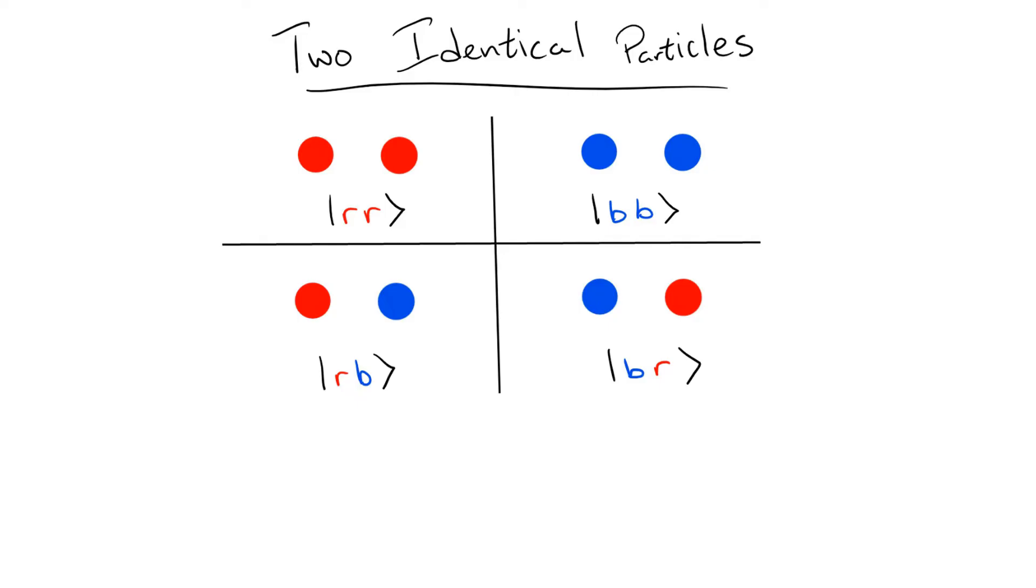and particle 1 blue, particle 2 red. Like before, we can write a general state of the system as a scaled sum of these possible outcomes, which we can write more concisely as the sum over i and j, c i j times the i j state, where i and j can be either red or blue.